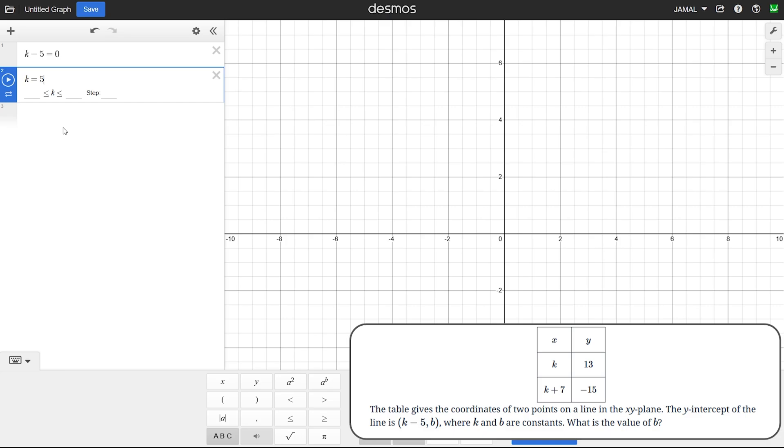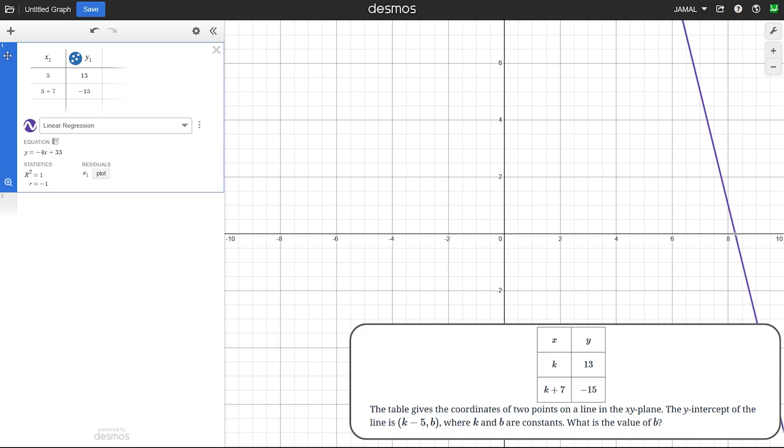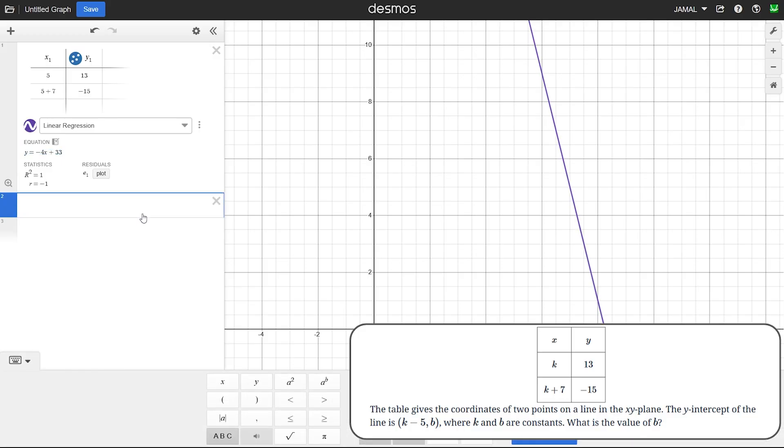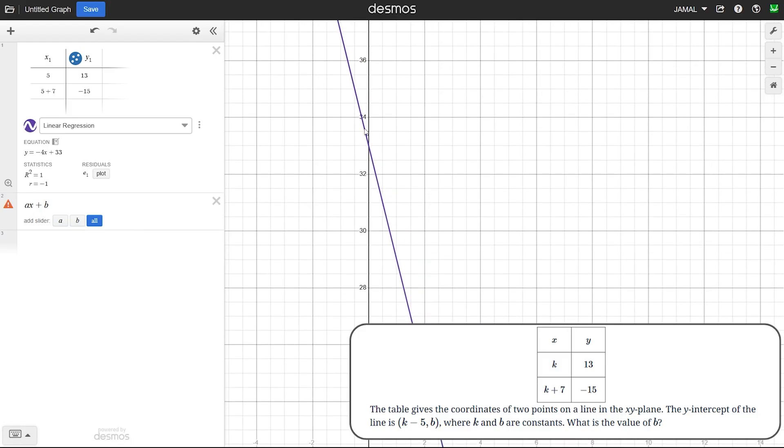Next, we make a table regression. We type table in Desmos and substitute five instead of k values. Then we press this button and the regression comes out. To understand how a linear function looks like, it's the overall structure y = ax + b where a is the slope and b is the y-intercept. Whenever we have y-intercept of a linear function, it will be its b. Here I can see that my b is 33, and on the graph I can see that my y-intercept equals 33. So the value of b is 33.